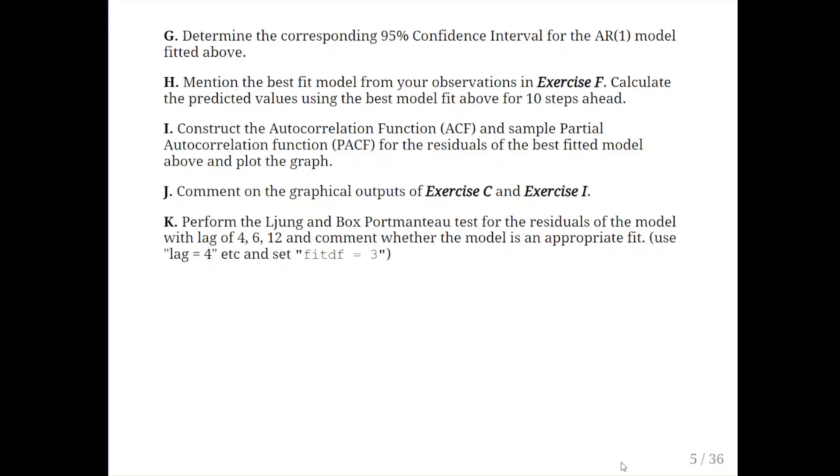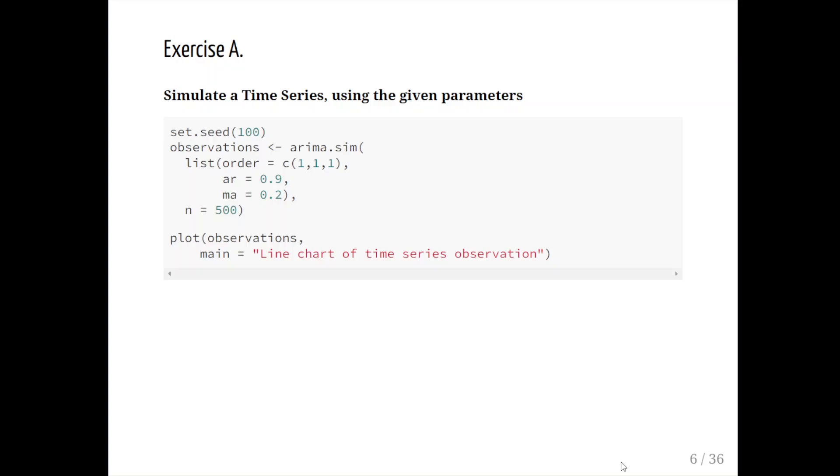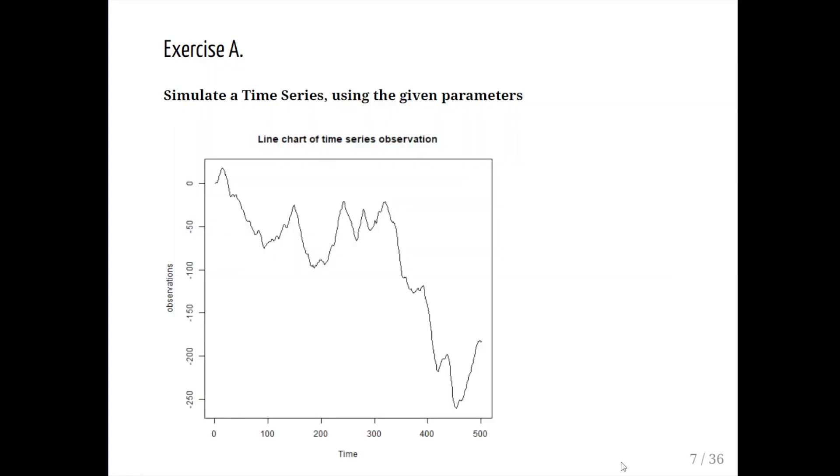Let's simulate a time series using the given parameters. We have set.seed(100) and we're going to use the arima.sim command to set up our observations. We were told order equals c(1,1,1), AR equals 0.9, MA equals 0.2, and we have 500 observations, so n equals 500. We're going to plot that and title the plot 'Line chart of a time series observation.'